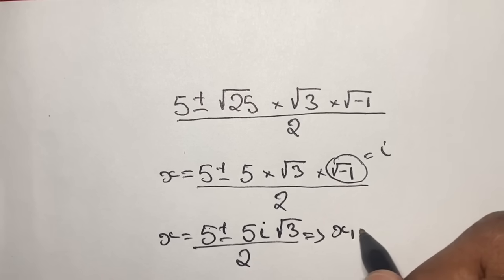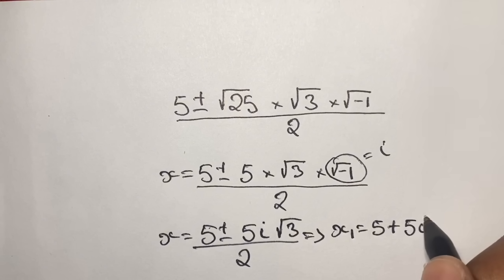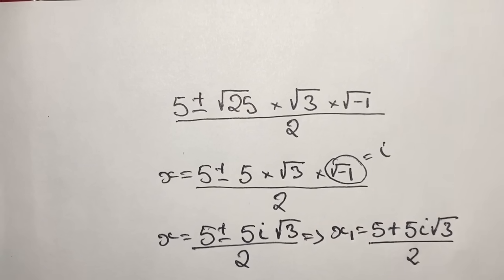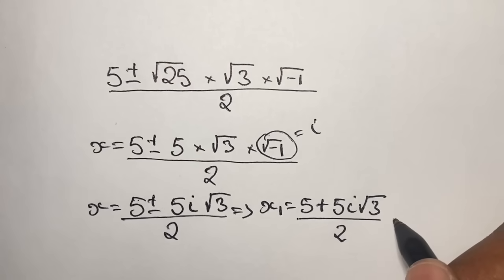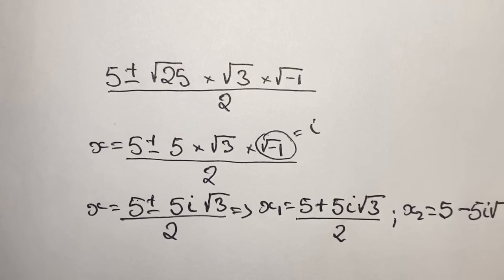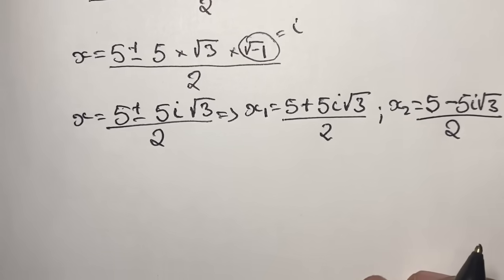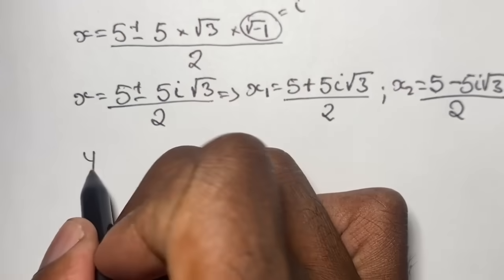We have two solutions for x. The first solution is x₁ equals 5 plus 5i times the square root of 3, all over 2. The second solution is x₂ equals 5 minus 5i times the square root of 3, all over 2. Now that we have both solutions for x, it's time to solve for y.